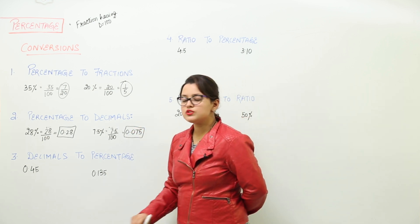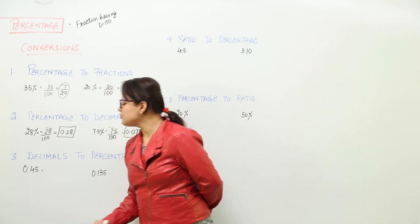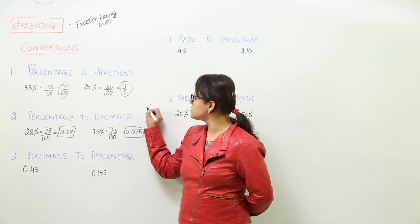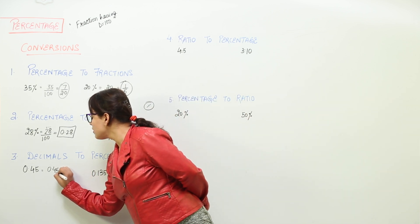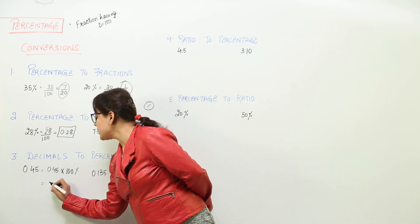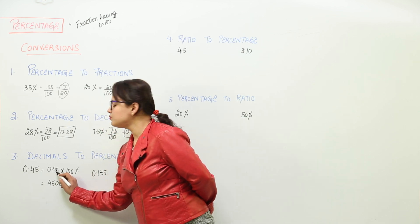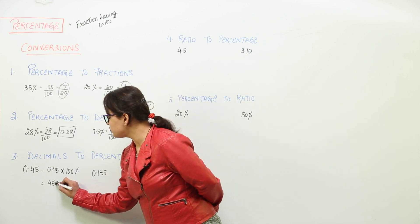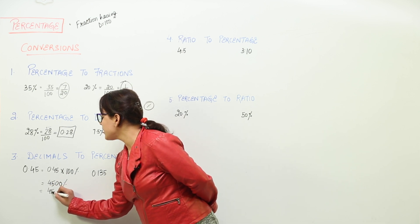Next is the conversion from decimals to percentage. We multiply 0.5 with 100 percent. When you multiply these, you get 45 with two zeros and two decimal places to be placed. Start counting from the rightmost part and put the two decimal places, then add a percentage sign. That gives us 45 percent.